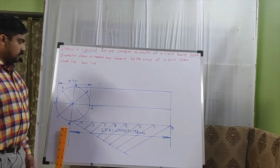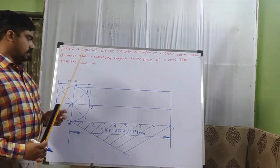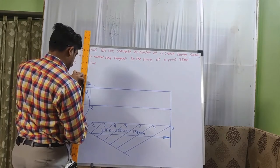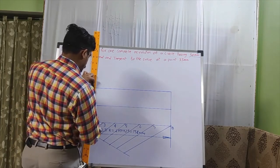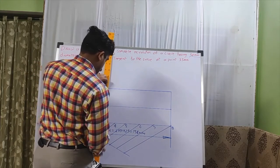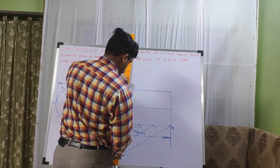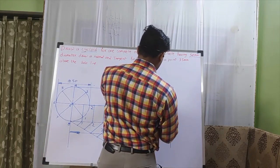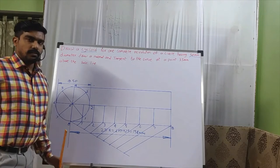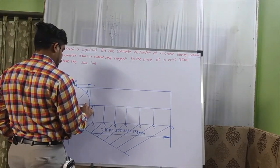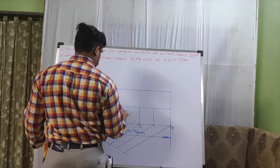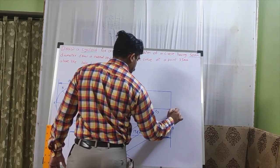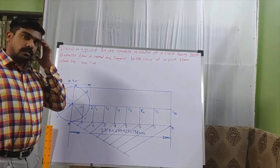Draw vertical lines at every division on the baseline. Label them as 1, 2, 3, 4, 5, 6, 7. Draw the center line through these verticals and label the intersection points as C1, C2, C3, C4, C5, C6, C7, and C8. These are the successive positions of the circle's center as it rolls.